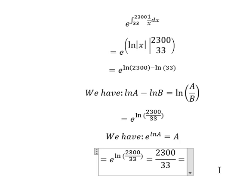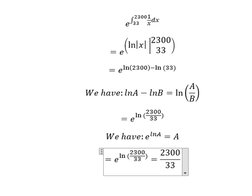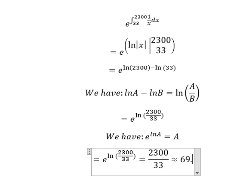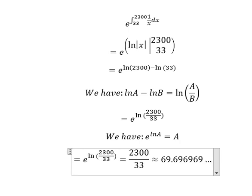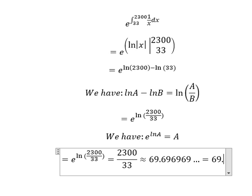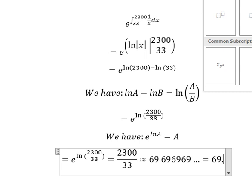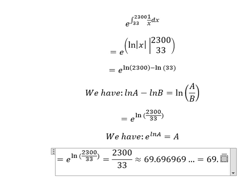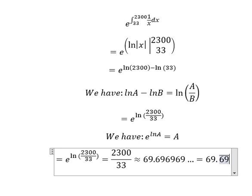And if we put into approximation, you get about 69.6969... repeating. So I can write this as 69 point, with a bar over 69. And this is the final answer we need to write.